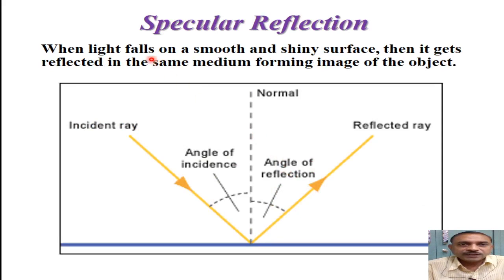Specular reflection. When light falls on a smooth and shiny surface, then it gets reflected in the same medium, forming the image of the object. Consider this diagram.